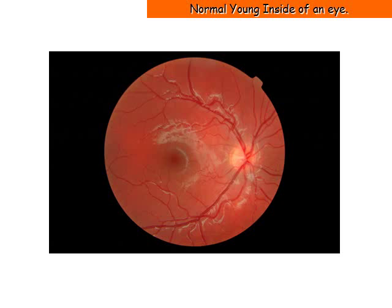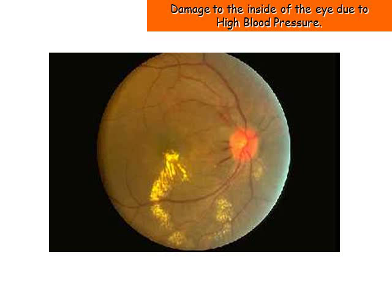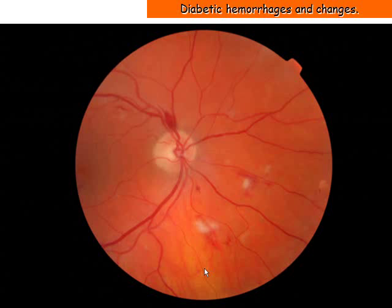We see in this image a normal young inside of an eye. Here we have an example of an eye that has damage to the inside due to high blood pressure. The whitened areas show the vessels that no longer receive sufficient blood supply — these areas in the eye are no longer able to see. This image shows diabetic hemorrhages and changes.